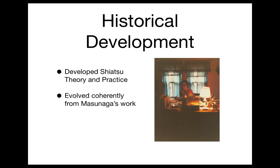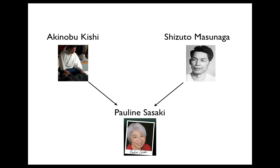Her work evolved coherently from Masanaga's work, particularly in the early and middle periods, where her project was really to complete the Zen Shiatsu system. Her two main influences were Masanaga and Kishi. Masanaga developed the Zen Shiatsu system during the 70s, and Pauline had a unique insight into this because she helped translate the book Zen Shiatsu and was involved working directly with Masanaga in the important seminars he gave in New York in the late 70s. After travelling to Japan and graduating with Masanaga, she went on to apprentice with Akinobu Kishi, who helped her refine her experiences of the finer aspects of energy work. It was these two influences — Kishi and Masanaga — that combined into developing Pauline's quantum Shiatsu system.